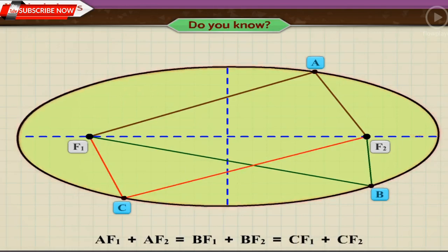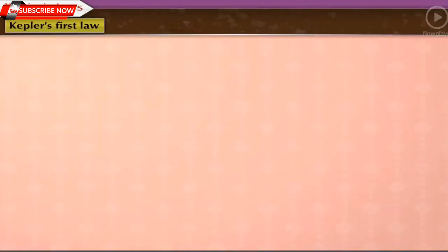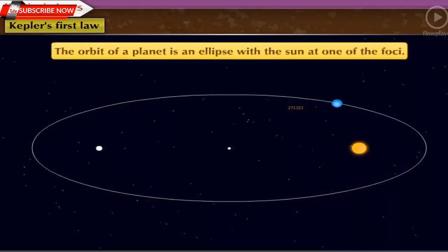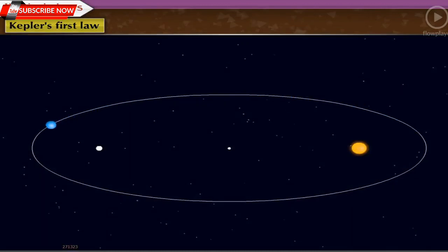After learning what is an ellipse, let us now study Kepler's First Law. The orbit of a planet is an ellipse with the sun at one of the foci. The elliptical orbit of a planet revolving around the sun is shown here. The position of the sun is indicated by the letter S.